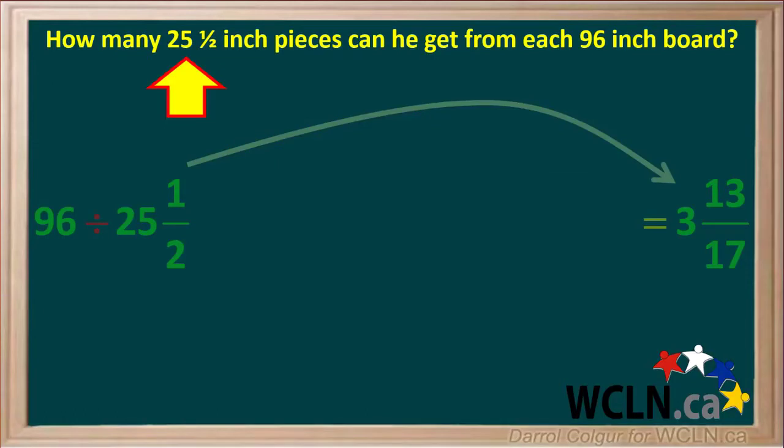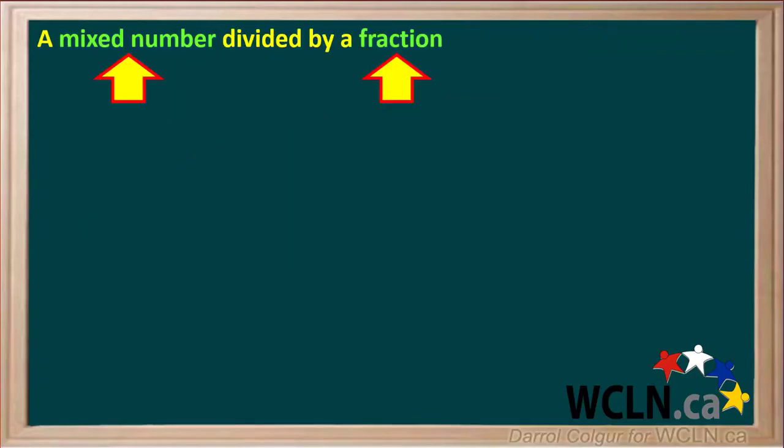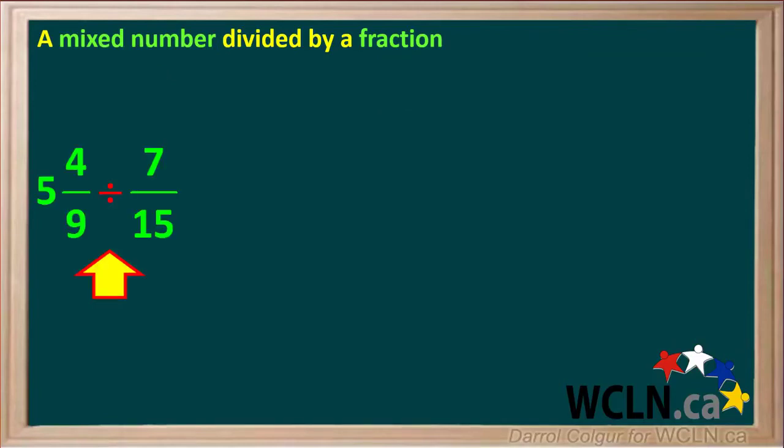Now we can answer the question: how many 25 and a half inch pieces can he get from a 96-inch board? The answer is he can get 3 full pieces.